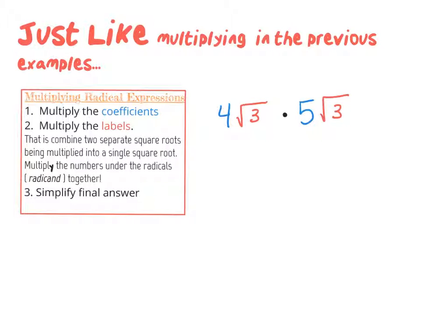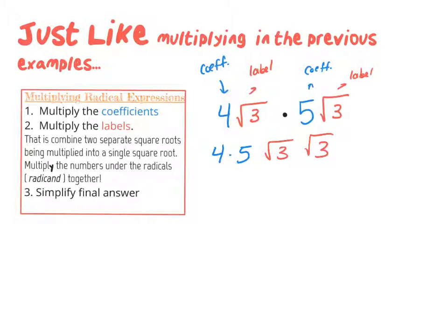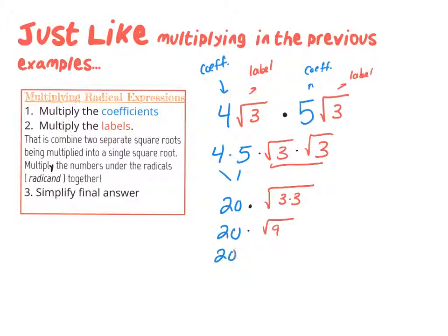Now let's see how we do it with radicals. When we see a radical expression, the first number is the coefficient and we treat the square root as the label. Just as before, we multiply coefficients — 4 times 5 — and we multiply labels. Two separate square roots combine into one square root, and we multiply the radicands: √3 times √3 is √9. Since 4 times 5 is 20 and √9 is 3, our final answer is 60.